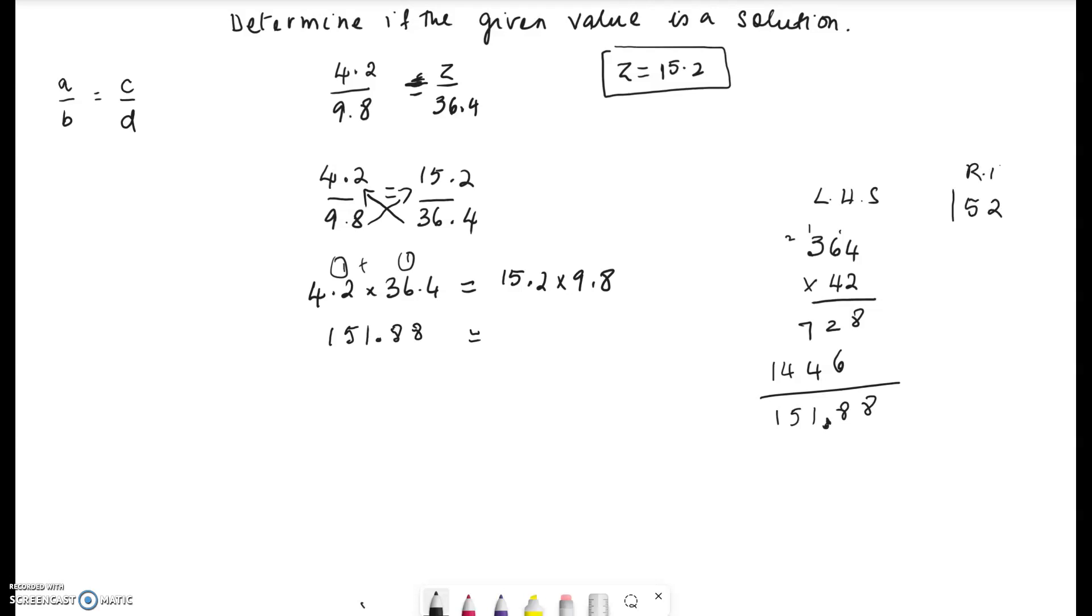The right-hand side without the decimal points is 152 times 98. 8 times 2 is 16, 8 times 5 is 40 plus 1 is 41, 8 times 1 is 8 plus 4 is 12. 9 times 2 is 18, 9 times 5 is 45, then 46, 9 times 1 is 9 plus 4 is 13. The number of decimal places is 1 plus 1, which is two decimal places, and that is 148.96.